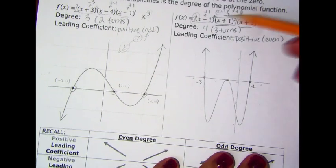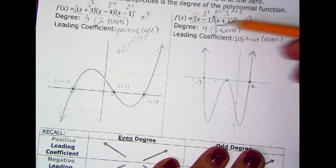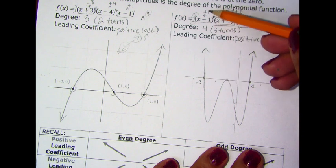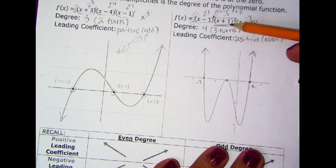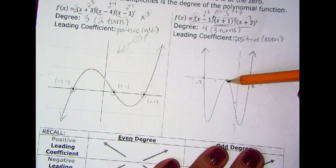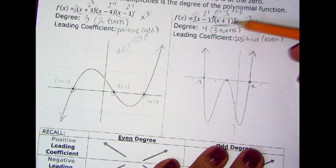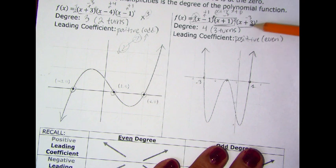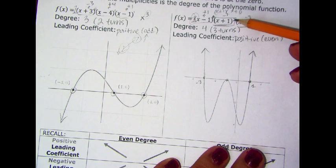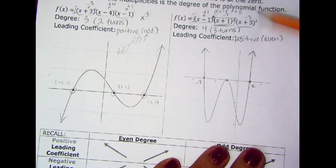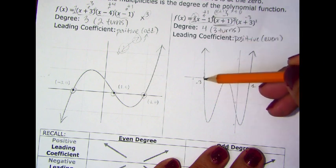In this other example, we have a factor to the first power, a factor to the second power, and a factor to the first power. Notice that the zero at positive 1, created by the second-power factor, has the graph that touches and turns at negative 1 — because the multiplicity is to the second power. Over here, the multiplicity of 1 creates a zero at negative 3 that makes the graph just go through. So if the degree of the factor is even, it will touch and turn; if it's odd, the graph goes through that zero.